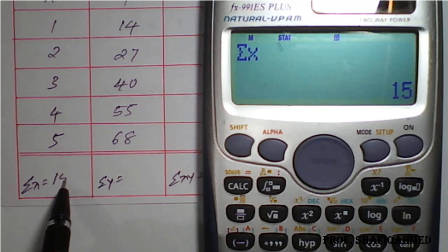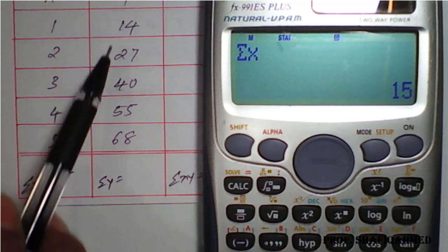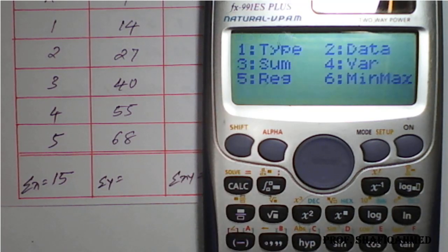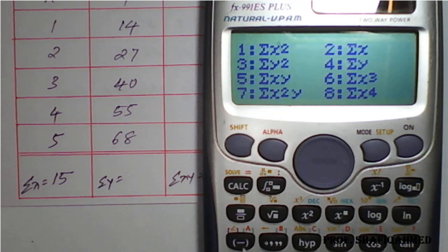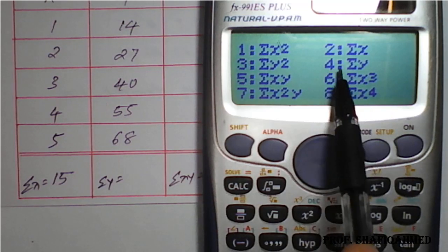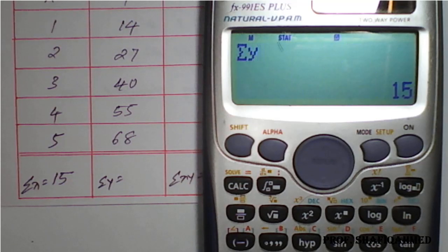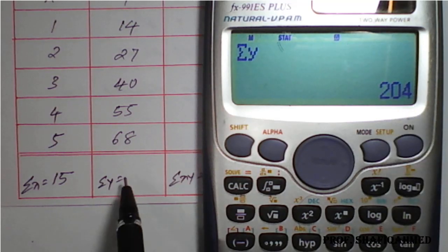Summation X equals 15, which you can cross-check manually. Similarly, to get summation Y, go back to SHIFT 1 for STAT, then option 3 for sum. Summation Y is option 4 — press 4 and equal. The result is 204.